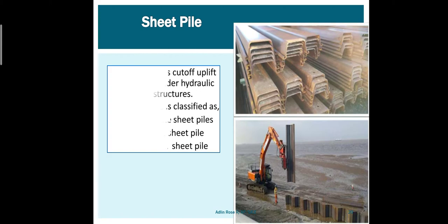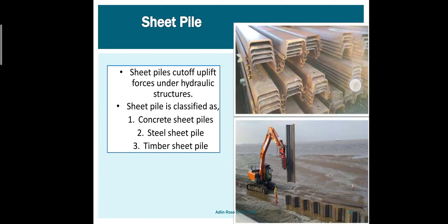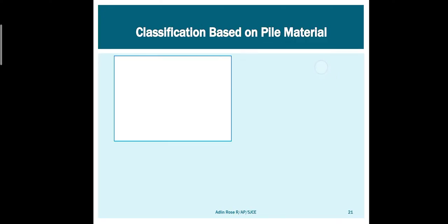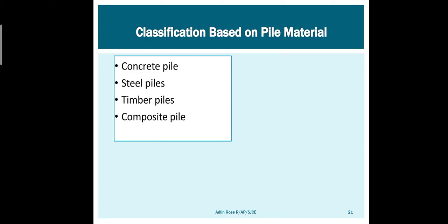Sheet piles can be made of concrete, steel, or timber. The second classification is based on pile material. Three popular materials are concrete, steel, timber, and there are composite materials also.